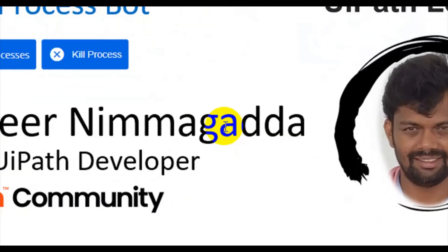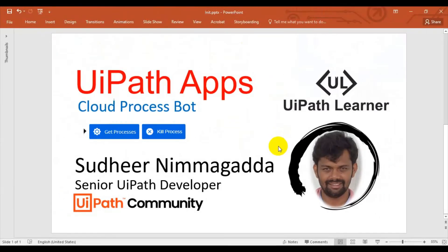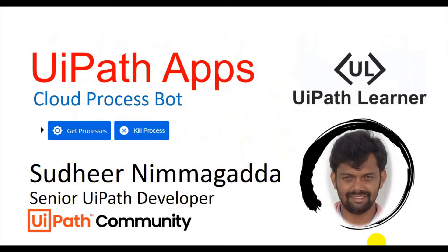Hello, UiPath experts, welcome to the UiPath channel. Thank you for subscribing — if you haven't, please subscribe. Today we will see about the UiPath Apps cloud process bot. We will get the processes of the system from the cloud and kill processes from the cloud. Windows processes like Excel, Word — any process which is running you can monitor, and you can kill processes from UiPath Apps, just like ending a task from Task Manager.